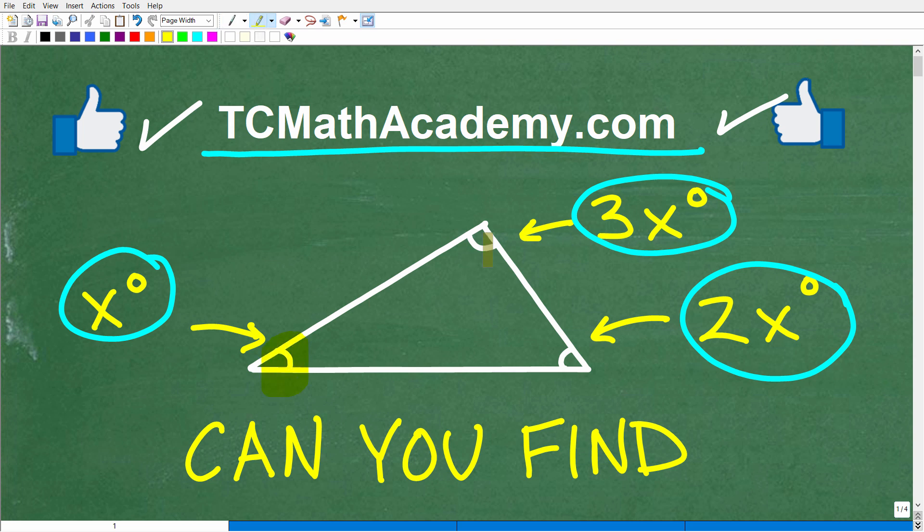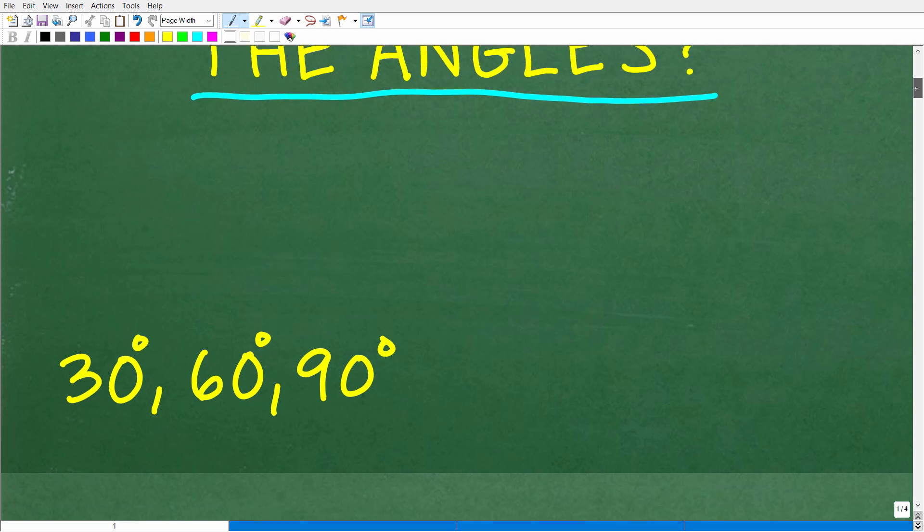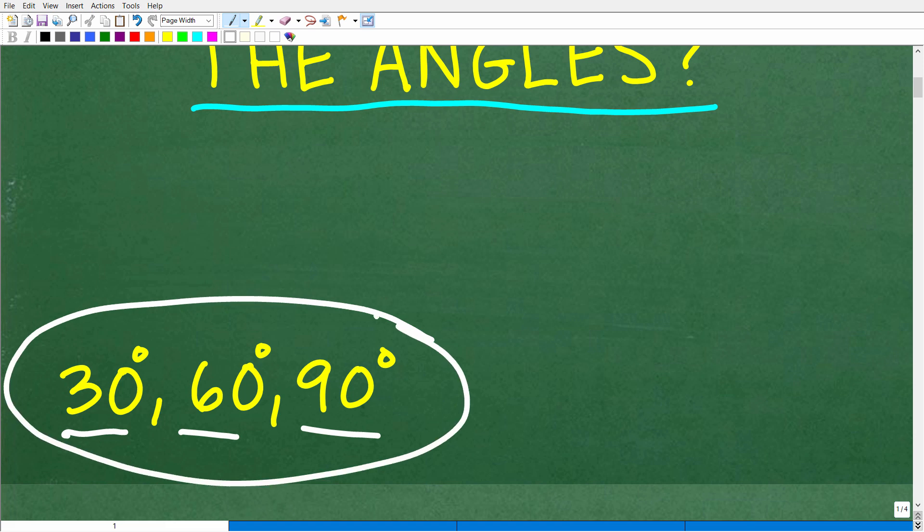Okay, so we're looking for three angles: this one, this one, and this one. What are the angles? Well, let's go ahead and take a look at the answer. The actual answer is 30 degrees, 60 degrees, and 90 degrees. That is it. This is not a difficult problem.